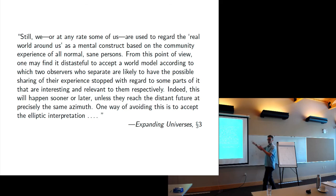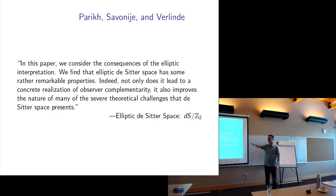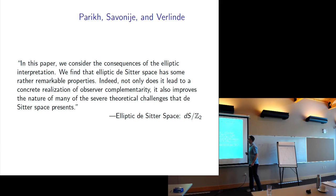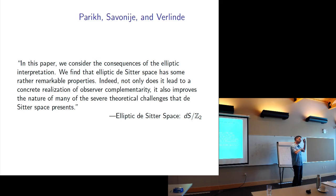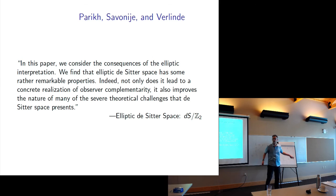Here's something from around 2003–2004 when people were working on the CFT side: a paper advocating a return to elliptic de Sitter spacetime — there were a bunch of papers around the same time. They write: 'In this paper we consider the consequences of the elliptic interpretation. We find that elliptic de Sitter space has some remarkable properties. Not only does it lead to a concrete realization of observer complementarity, it also improves upon many of the severe theoretical challenges of de Sitter spacetime.' One severe challenge: it has two boundaries, which is a real pain if you want to find the de Sitter version of AdS/CFT — one boundary would be much more convenient, and that's what you get with the elliptic interpretation.